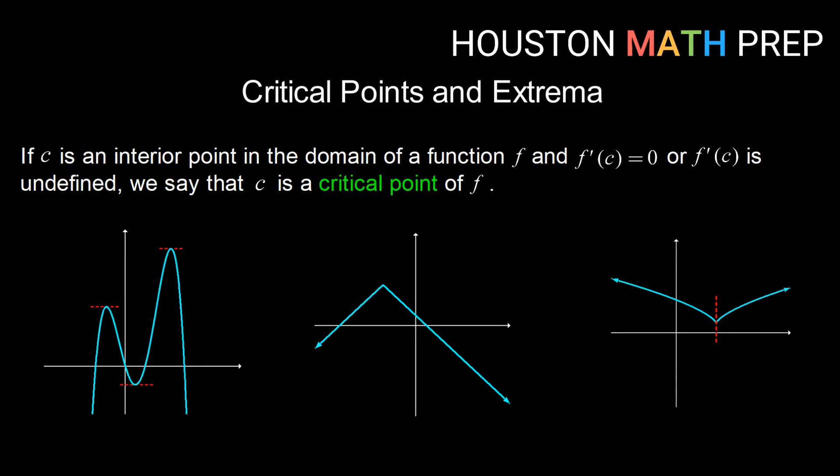Where f prime of c is undefined, we might have a couple of things happen. We might have a sharp point, like here in this absolute value function, or we might have a vertical tangent line, meaning the derivative here is having something over zero.